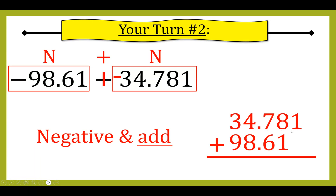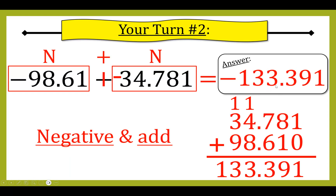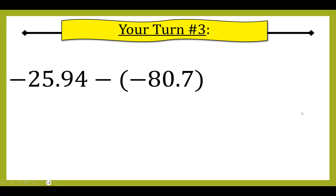I line up 34.781 plus 98.61 and fill in my zero. One plus zero is one, eight plus one is nine, seven plus six is thirteen, one plus four plus eight is thirteen, and one plus three plus nine is thirteen. I bring down my decimal. Since a negative plus a negative is negative, my answer is negative 133.391.